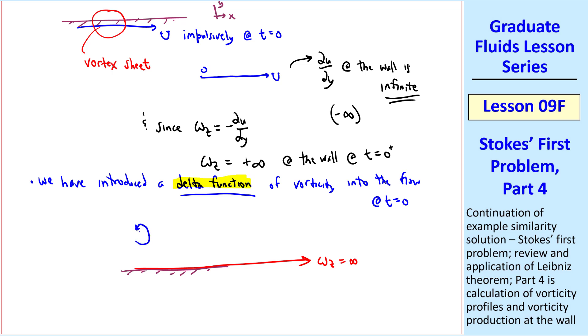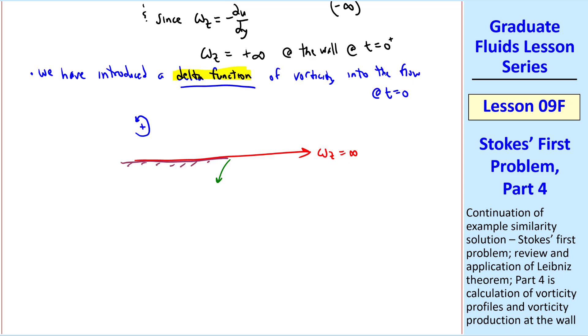In other words, from a vorticity point of view, we have an infinite spike of vorticity, which has infinite height but zero thickness, which is the definition of a delta function. And we know that omega z is positive, since it's defined positive counterclockwise. Mathematically, a finite amount of vorticity is dumped into the flow at the instant when the wall starts moving. This, of course, is an unsteady problem, and it actually produces vorticity. Delta functions have an area under the curve.